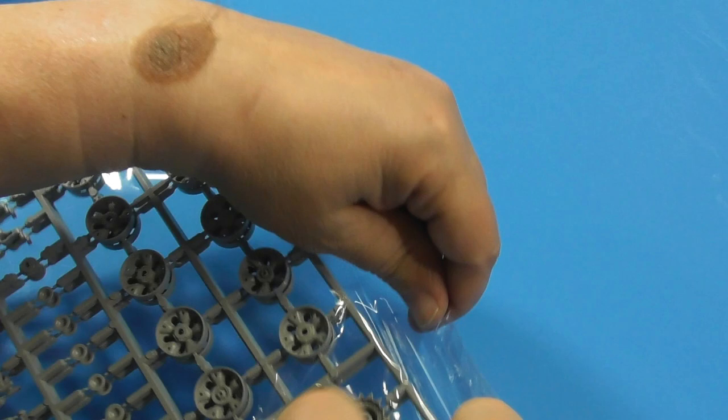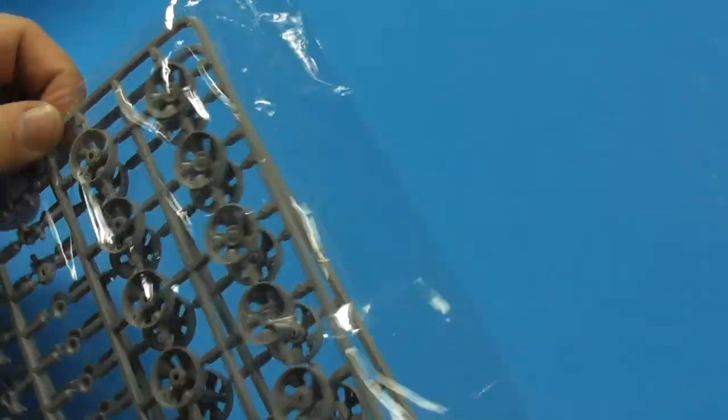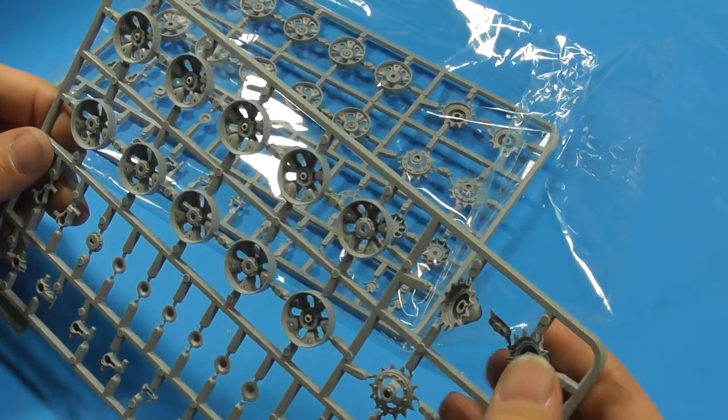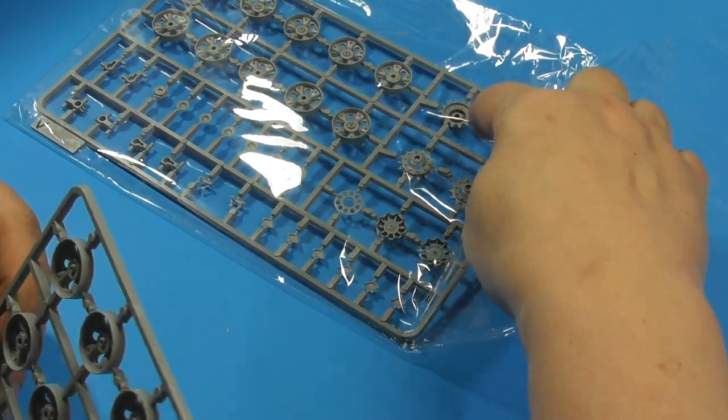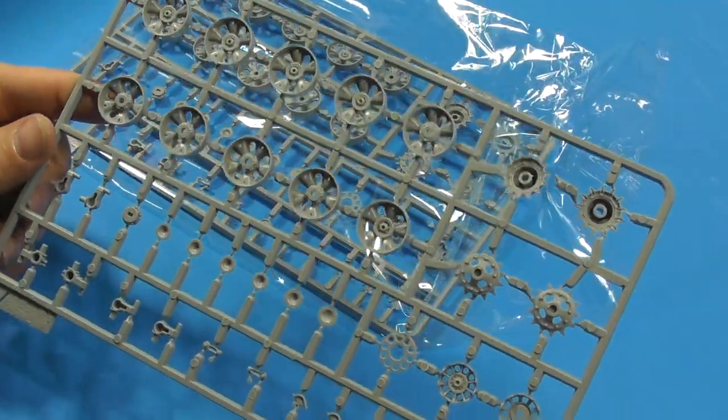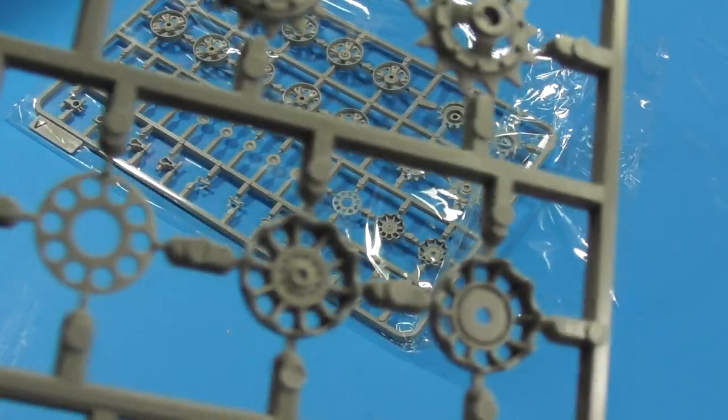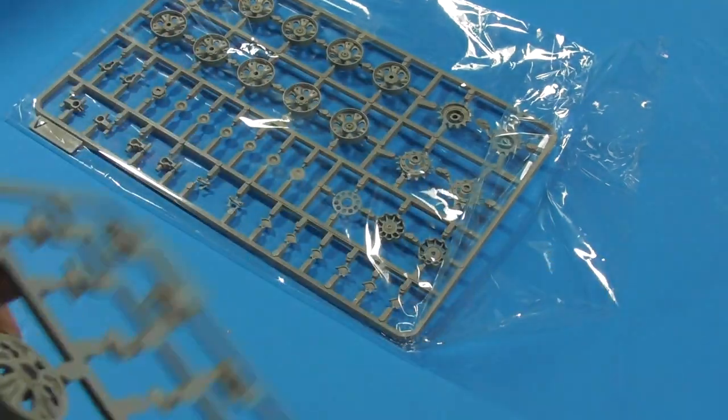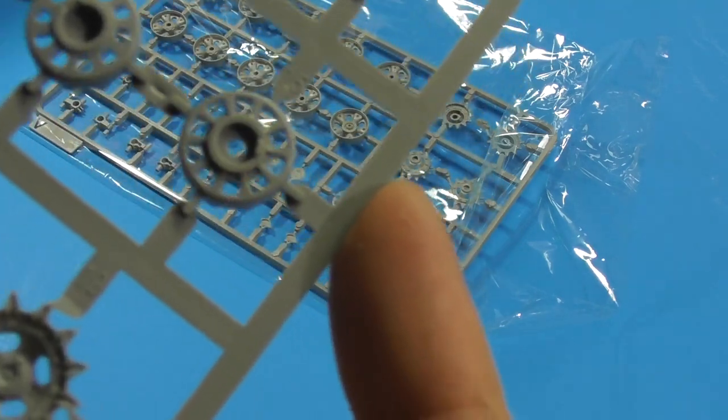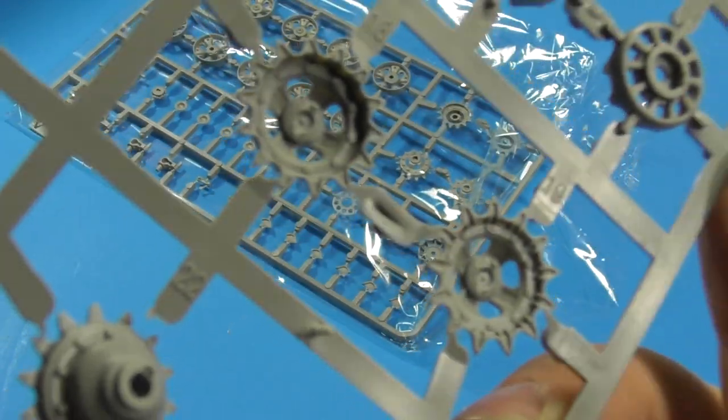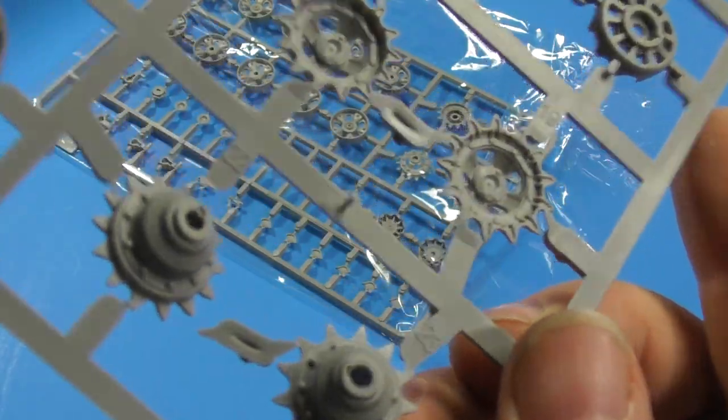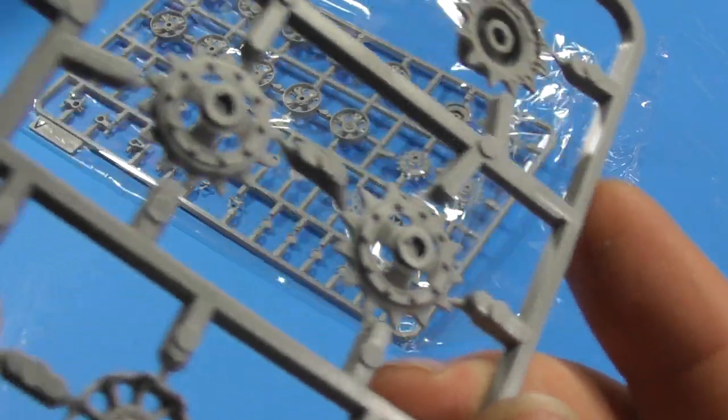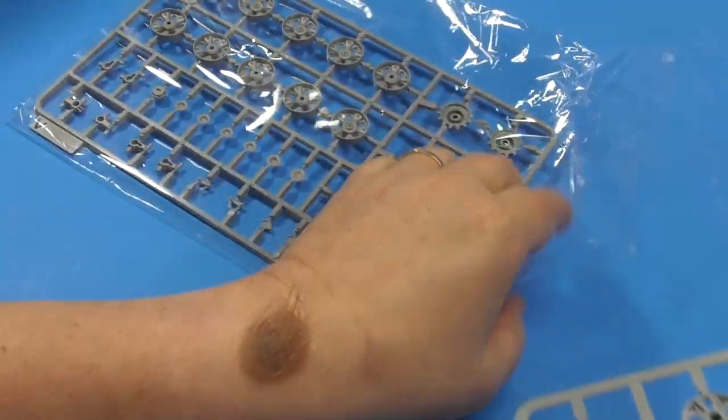Now while we're talking wheels, let's talk tank wheels. Looks like we've got two matching sprues in here. Drive sprockets. Those are loose. They're not loose on that one. Again, detail abounds. I don't know if they're supposed to have rubber on them or not. It doesn't look like it. But detail both sides. One side, the other side. Detail everywhere on these.